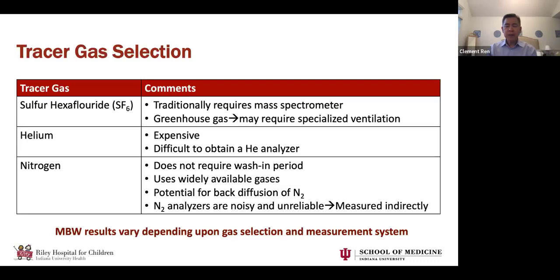Another issue with nitrogen is that nitrogen analyzers can be noisy and unreliable. In practice, nobody actually measures nitrogen directly — it's all measured indirectly. In the United States, most people are using nitrogen breath washout for these reasons. However, it's very important to realize that results — whether normal reference data or study data — between SF6, helium, and nitrogen, and even between measurement methods like mass spec versus infrared, are not interchangeable. You must compare data from the exact same system.